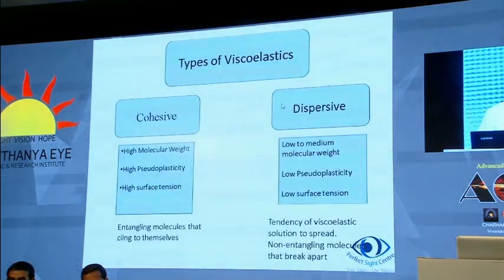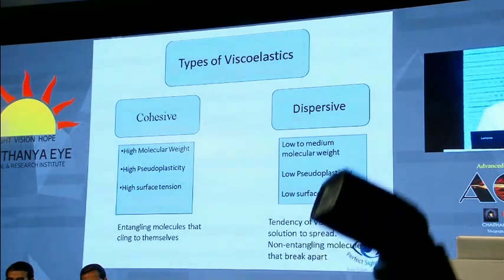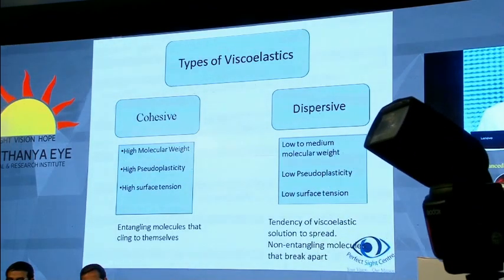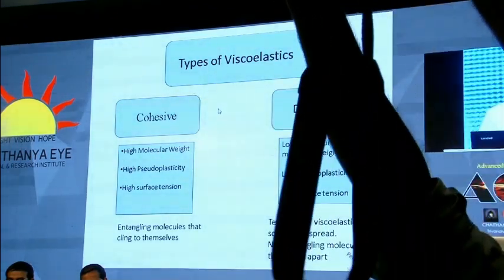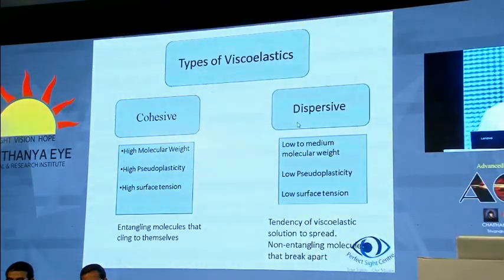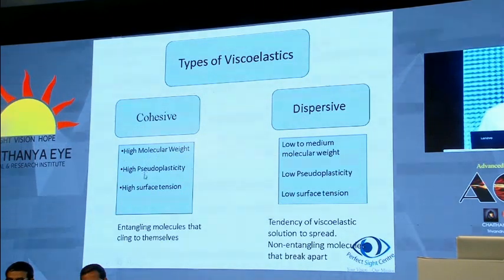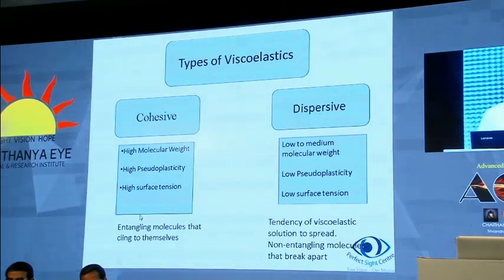Unfortunately, an ideal OVD does not exist as yet. What are the types of viscoelastics? There is a lot of confusion. Broadly speaking, they are cohesive and dispersive, with some newer technologies as well. Cohesive OVDs are high molecular weight viscoelastics with high pseudoplasticity and high surface tension — they have entangling molecules that cling to themselves.